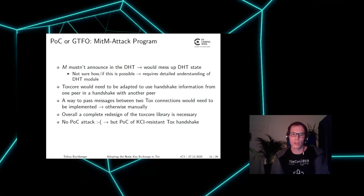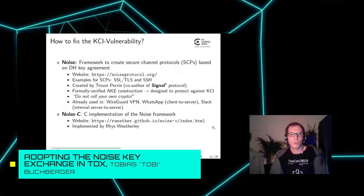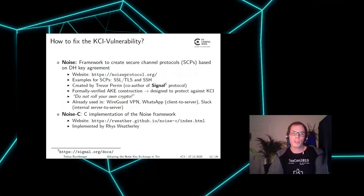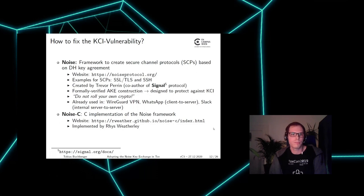But I will show you a proof of concept of the KCI-resistant TOX handshake implementation. How did I fix the KCI vulnerability? There is a framework called Noise. This framework can be used to create so-called secure channel protocols based on Diffie-Hellman key agreement — such as SSL, TLS, or SSH. The Noise framework was created by Trevor Perrin, the co-author of the Signal protocol.